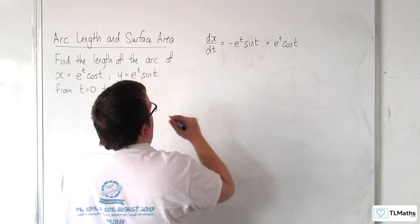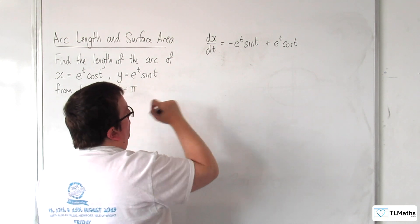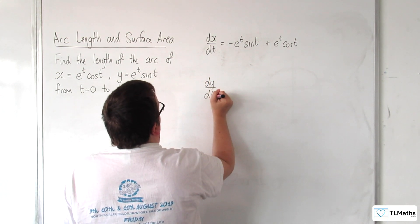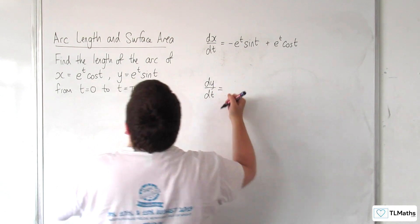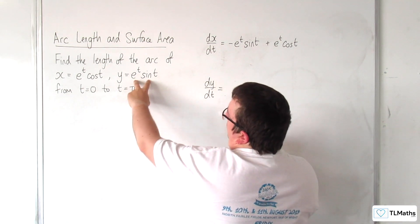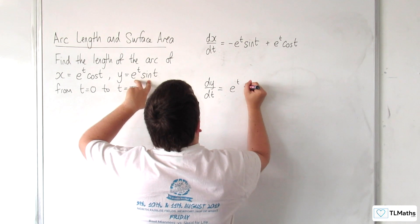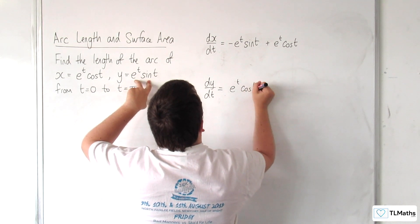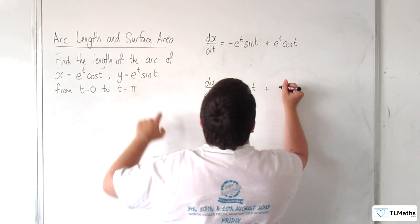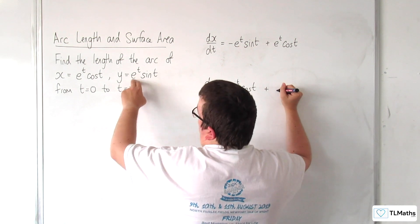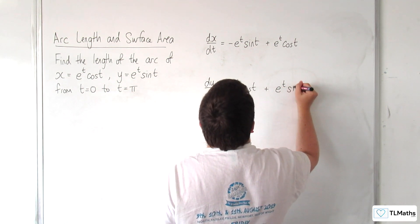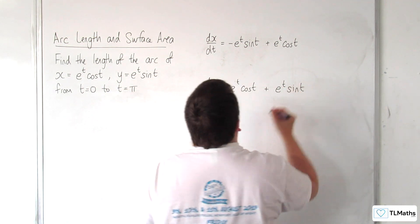Then we need dy/dt. Again, product rule: e to the t times the derivative of sine t gives e to the t cosine t, plus sine t times the derivative of e to the t, which is just e to the t, so plus e to the t sine t.